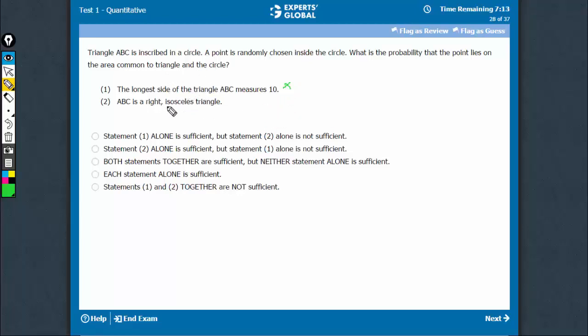Statement 2 says ABC is a right isosceles triangle. You see, there's a circle. The only way a right triangle can be inscribed is when the hypotenuse passes through the center of the circle, and the other two sides are equal.